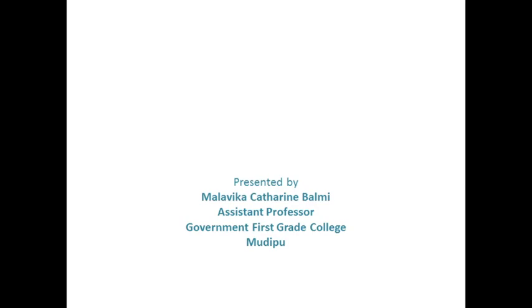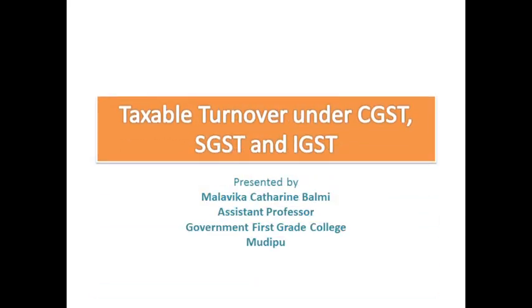Dear students, yesterday we have seen the concept of aggregate turnover. Today we will learn yet another concept which is important in computing. When we say aggregate turnover, we take the total supplies made by the taxable person. Whereas, when we discuss the concept of taxable turnover, we have to differentiate between CGST, SGST and IGST.